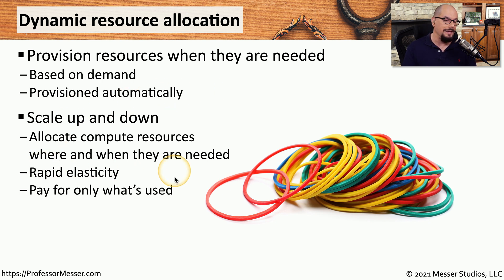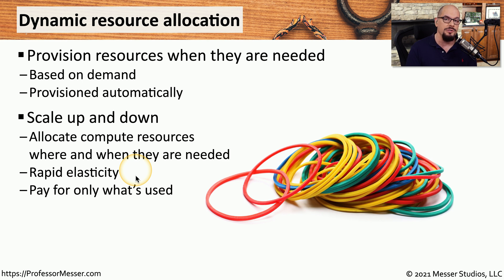We refer to this as rapid elasticity, and it's a very common way to maintain the uptime and availability of your cloud-based applications. This also allows you to minimize how much you're paying, because you commonly pay for these resources as you use them. When the application is busy, you pay a bit more; when the load decreases, you can remove resources and stop paying for them.